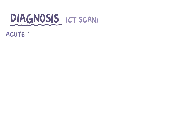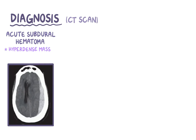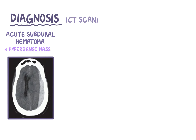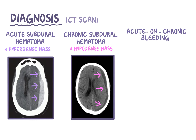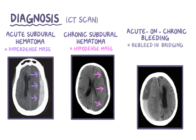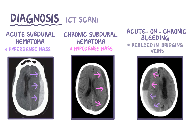Diagnosis of a subdural hemorrhage is typically done with an imaging study. On a CT scan, an acute subdural hematoma shows up as a hyperdense mass, meaning it looks more white than the surrounding healthy brain tissue. A chronic subdural hematoma, on the other hand, shows up as a hypodense mass, which is less white than the surrounding brain tissue. An acute-on-chronic bleeding is a combination of hyperdense and hypodense, seen in individuals who have a re-bleed in the bridging veins after a chronic hematoma has already formed.